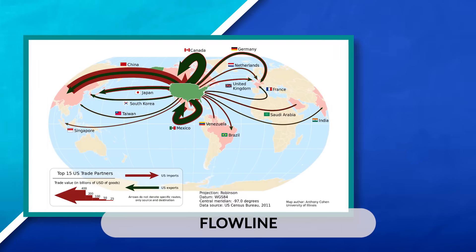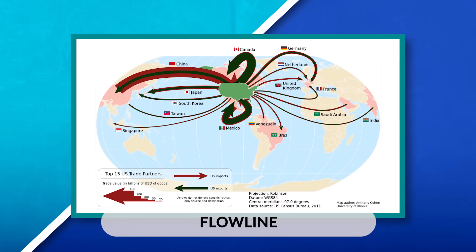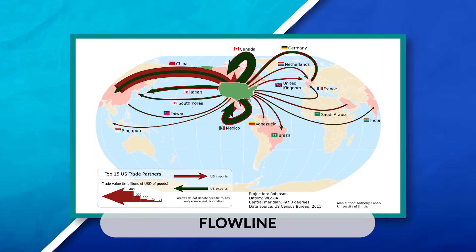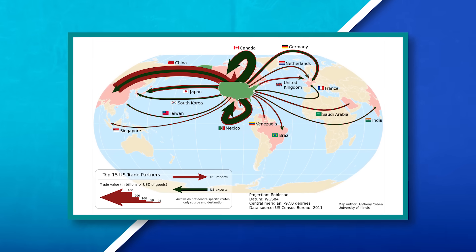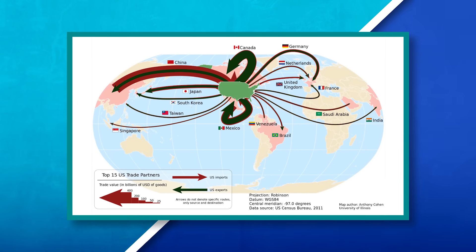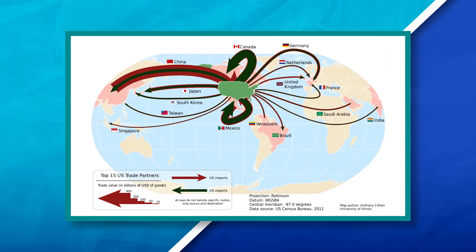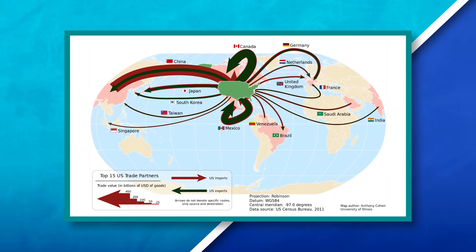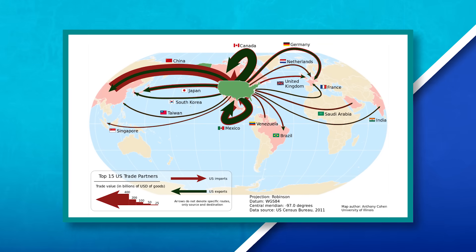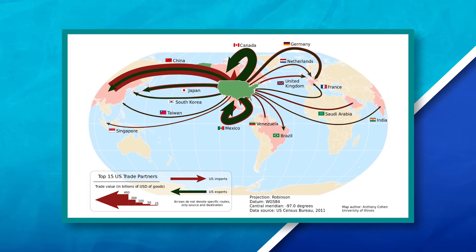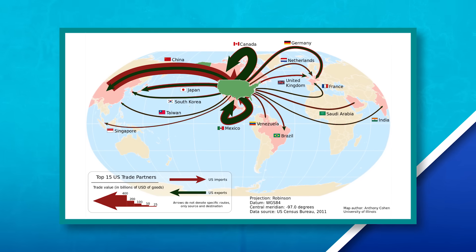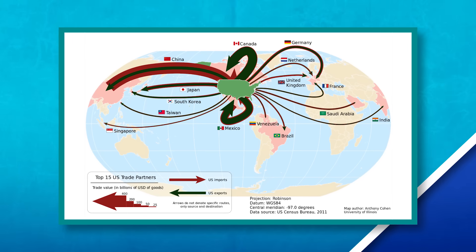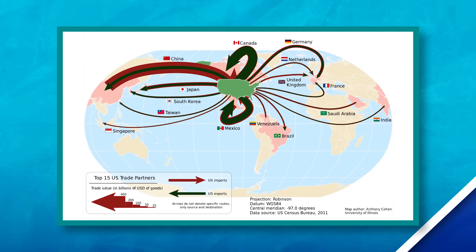Lastly, there's a flowline map. These maps show the movement of different goods, people, animals, services, or ideas between different places. For example, looking at the top 15 United States trade partners from 2011, we can see the amount of trade is illustrated by the size of the arrow, and the direction of the trade is color-coded to show both exports and imports.